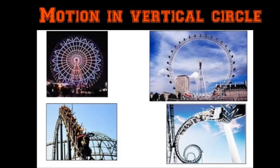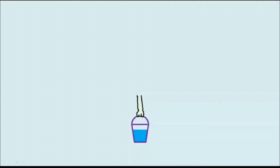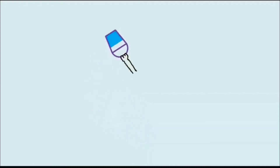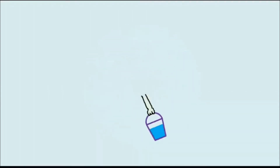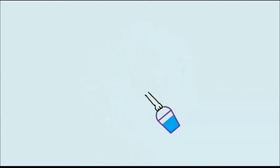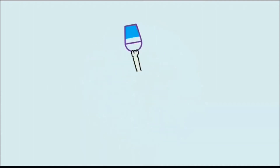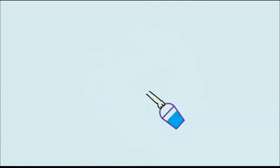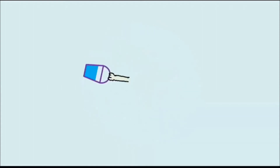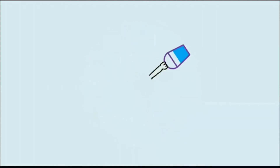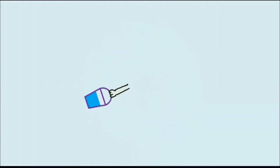In order to understand this, let's take a simple example. Say a person is holding a bucket full of water and he tries to move it in a vertical circle. You will be surprised to see that when the person moves the bucket with a certain velocity, the bucket crosses the highest point of this vertical circular path without spilling the water. Moreover, the bucket didn't fall down. Today we will evaluate the minimum velocity required by a particle to execute motion in a vertical circle.